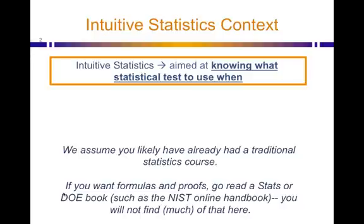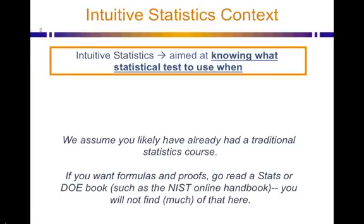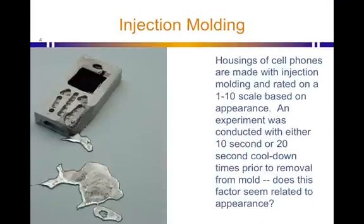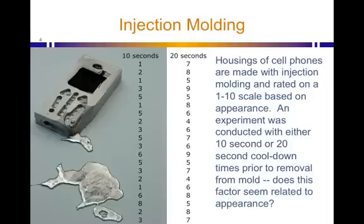We assume you've either already had a class on that or can go find materials that cover that material adequately. Our example today is on injection molding in particular with cell phone casings, and imagine that there were an experiment run where the cell phone casings were cooled down for either 10 seconds or 20 seconds prior to removal from the mold. They want to see if that affects the appearance of the cell phone casings. Now appearance in this case is measured on a 1 to 10 scale and let's assume that that scale has interval properties. Here's the data that we use for this example.